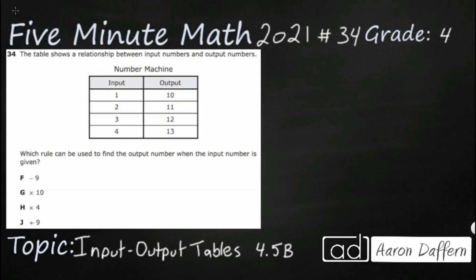Hello and welcome to 5-Minute Math. Today we are looking at the fourth grade concept of input output tables. This is standard 4.5B in the great state of Texas and we are using item number 34 off the 2021 released STAR test.